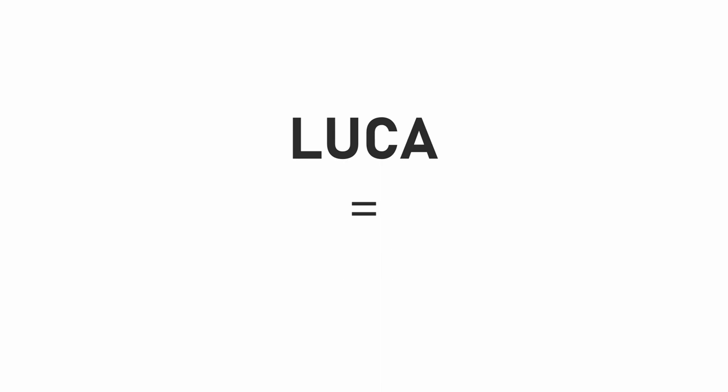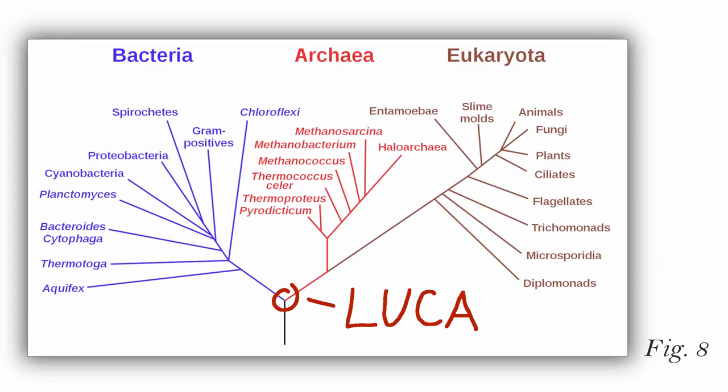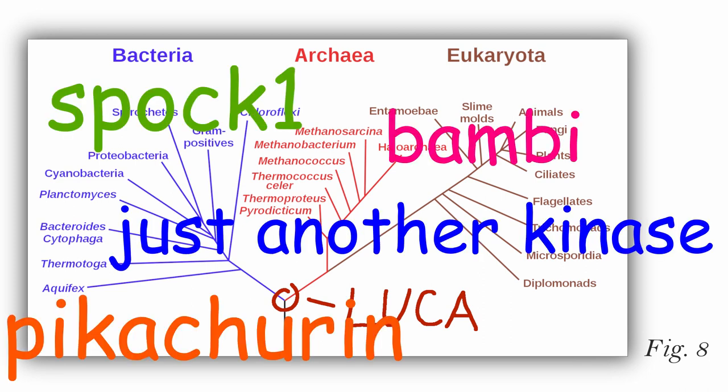LUCA is the name given to the last universal common ancestor of all living organisms, because biologists, like all other scientists, have a weakness for mediocre naming puns. Of course, this set of reactions also includes the Acetyl-CoA pathway.